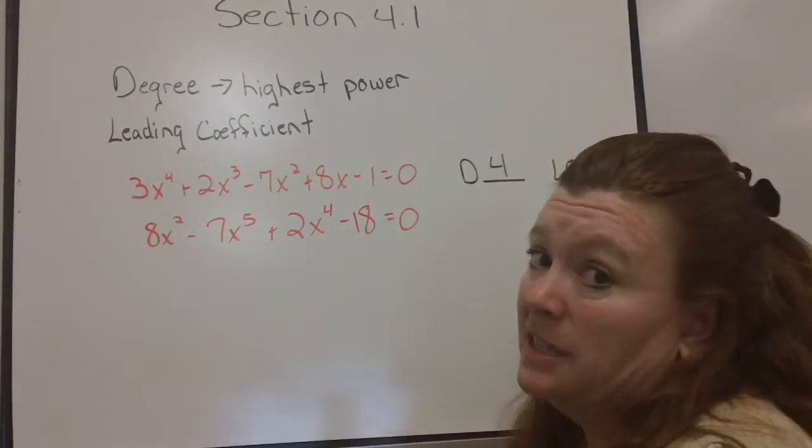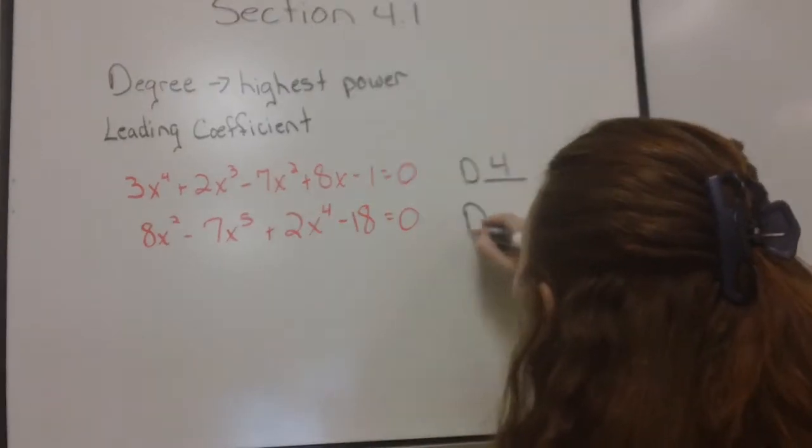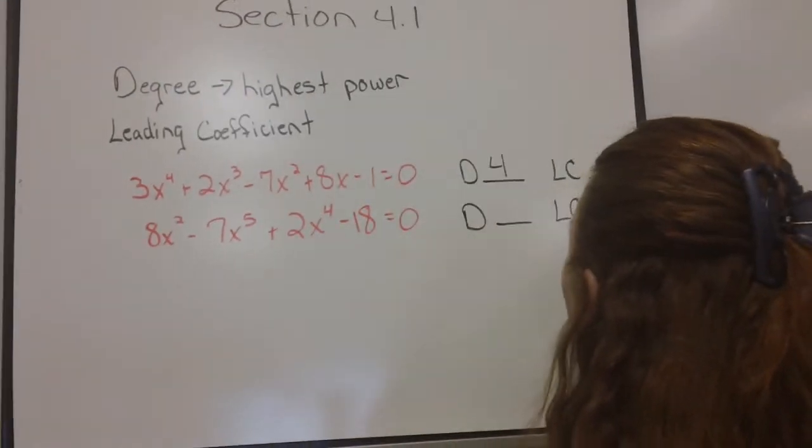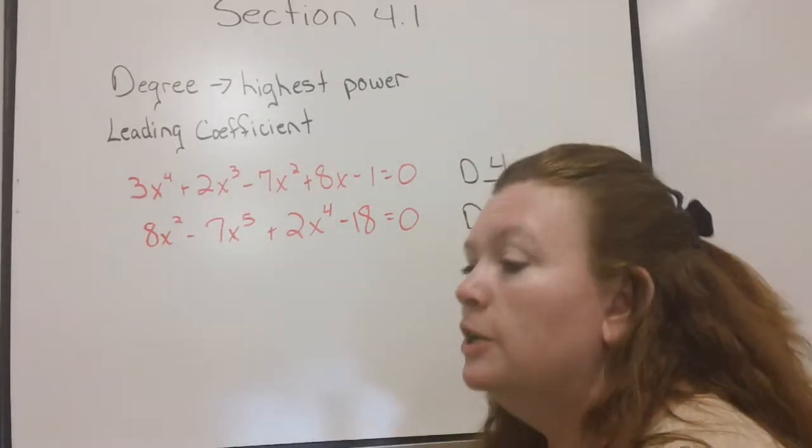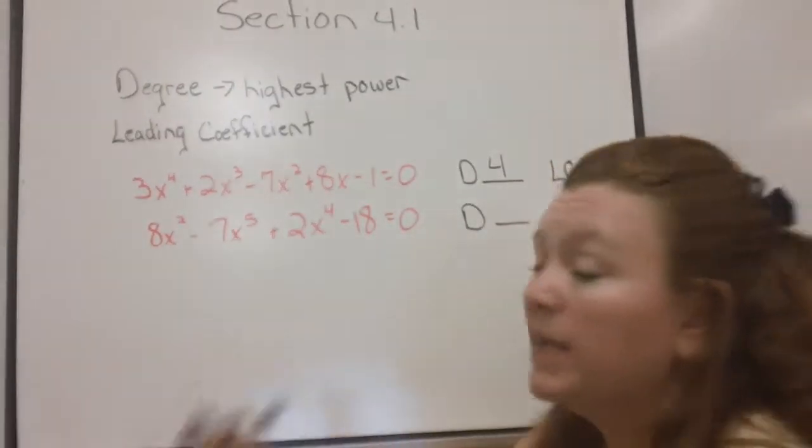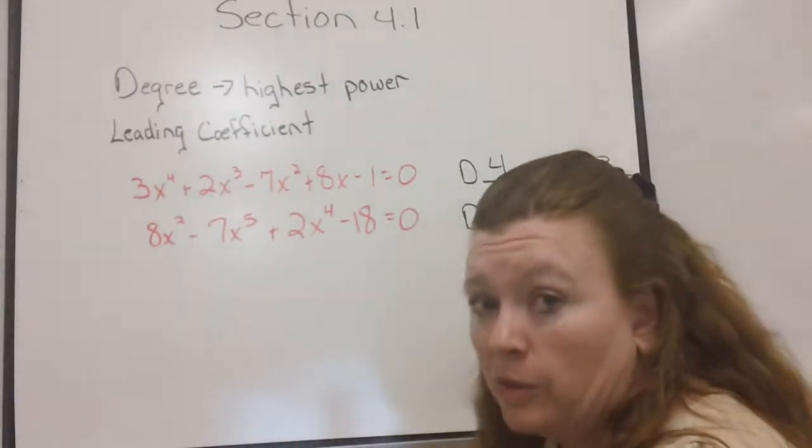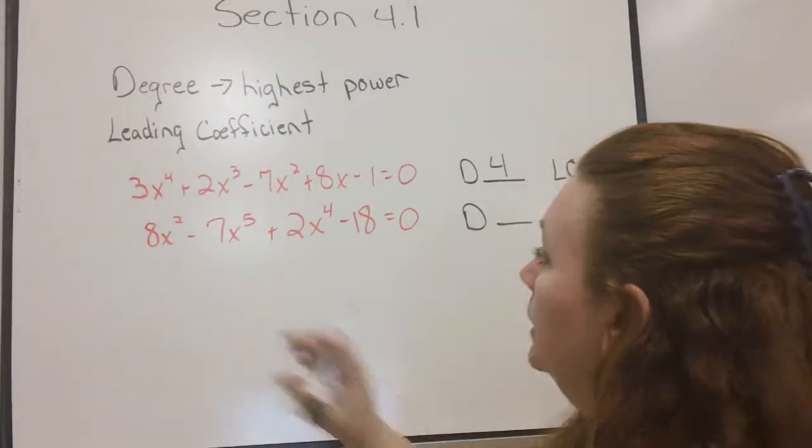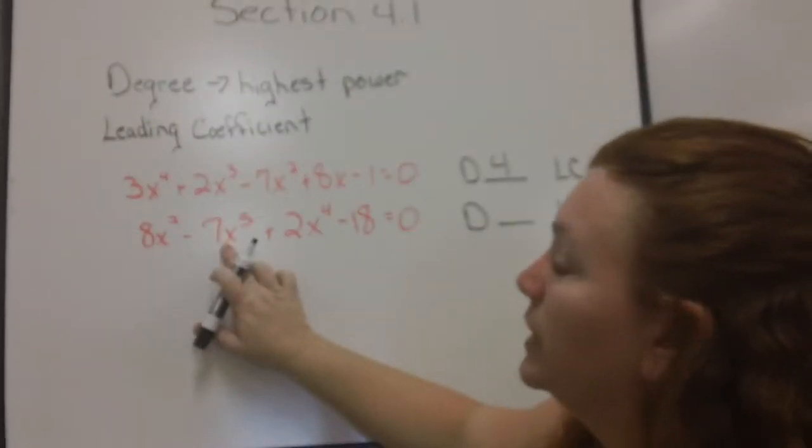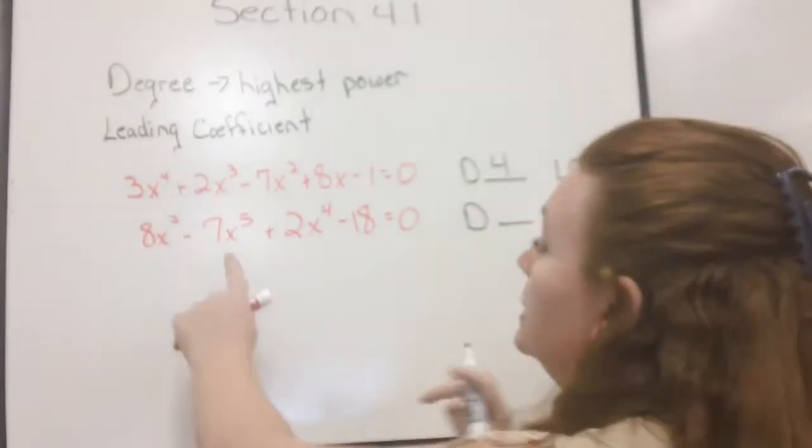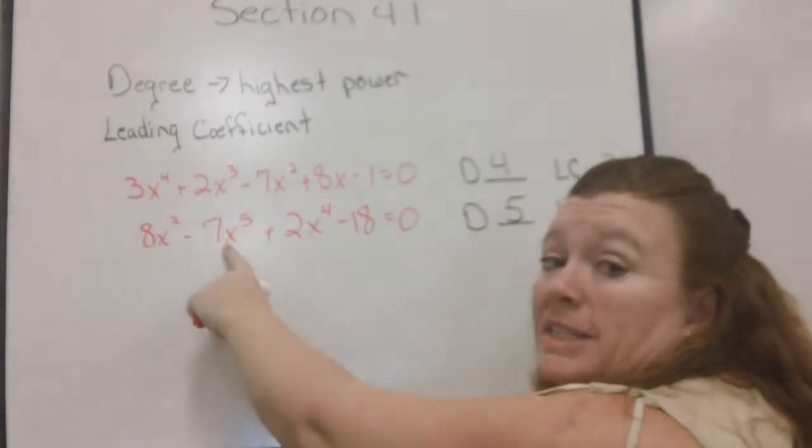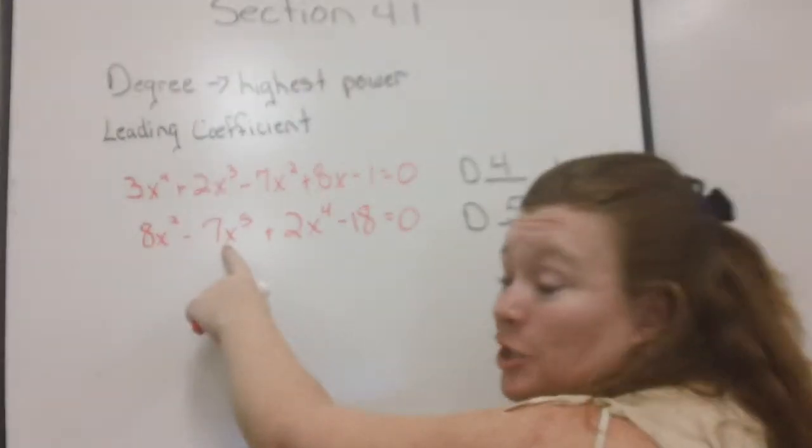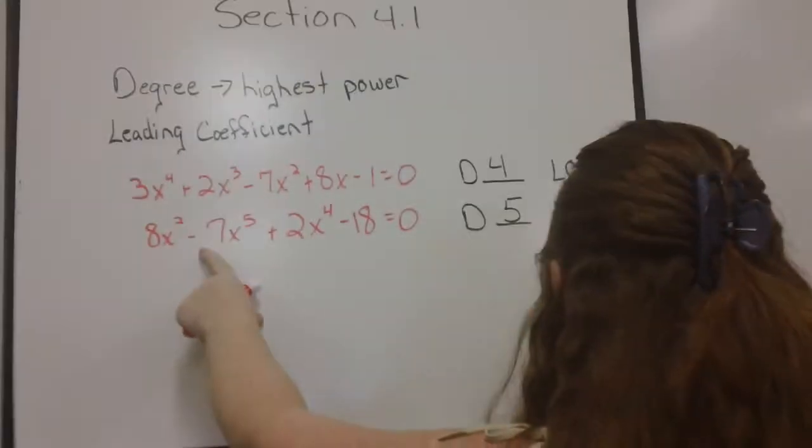Well, 8 is not my leading coefficient. It is the first, but that doesn't work right now because they're not written in the right order. You could rearrange and rewrite it and put them all in the right order. Or you could just look. Where's the highest power? It's right here. The highest power is 5. So, my degree is 5. What is the coefficient of that term? Negative 7. There you go.